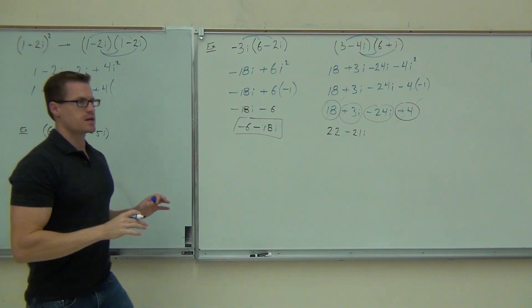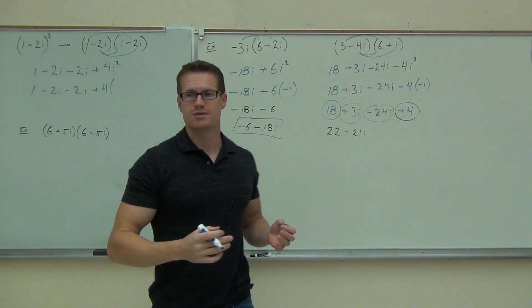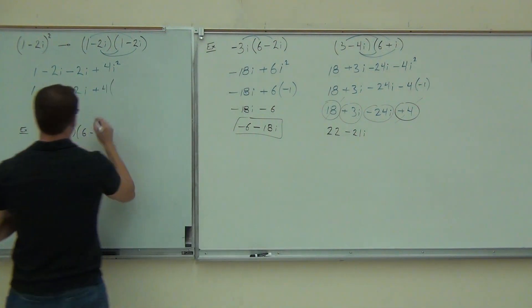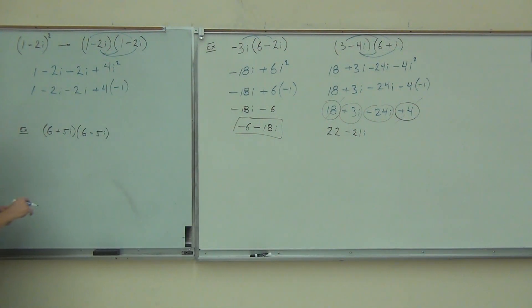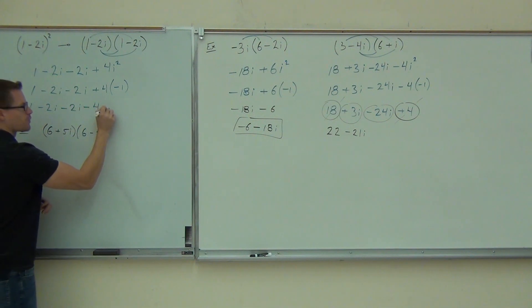So here it's the 1 minus 2i minus 2i plus 4. Just change the i squared to that negative 1. We know that's a definition for us. Every time we see i squared, it means negative 1. What that does is simply change that sign, really. 1 minus 2i minus 2i and then minus 4.